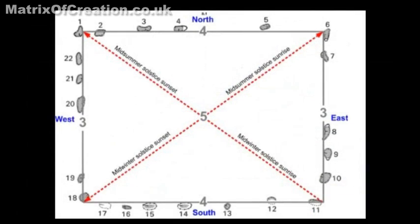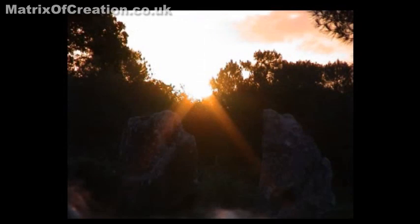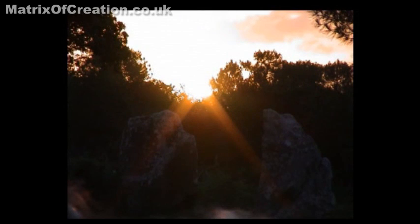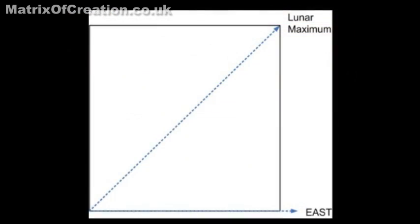The latitude of Karnak is very special, as the sun on the horizon at winter and summer solstice rises at the angle of a 3-4-5 triangle, so that this geometry is found everywhere relative to east.